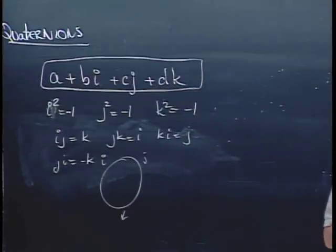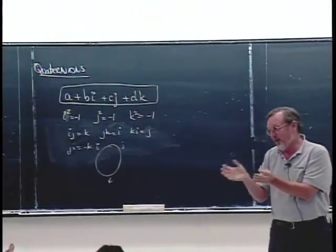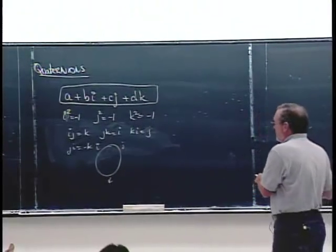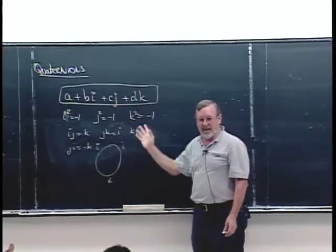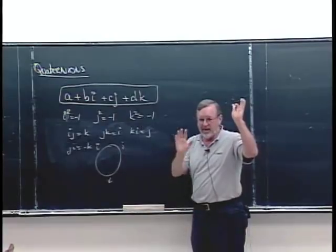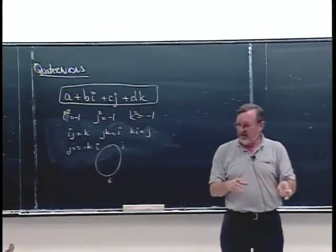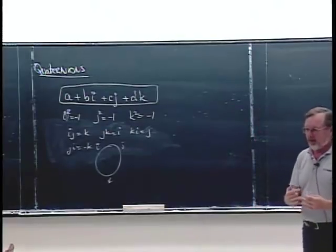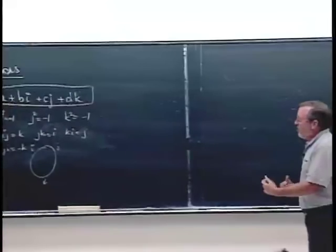He invented these things called quaternions. They were used for a bit and then became a curiosity. Mathematicians love to attack these curiosities with theorems and proofs until you can't prove anything more about them.